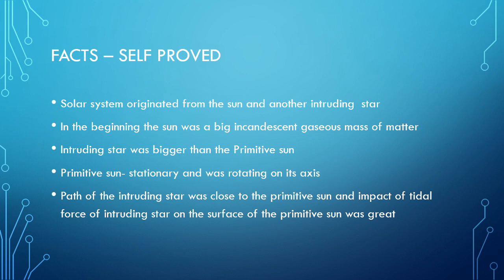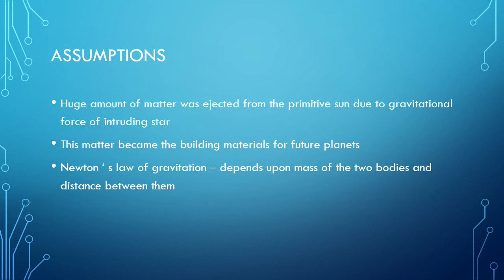The path of the intruding star was close to the primitive sun, and the impact of the tidal force of the intruding star on the surface of the primitive sun was very great. The primitive sun was stationary but rotating on its axis, while the intruding star was very large in size and coming close to it. Due to both tidal force and gravitational force — because of the large size of the intruding star — the impact was happening on the primitive sun.